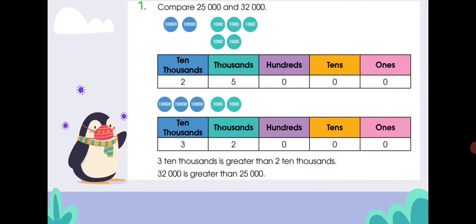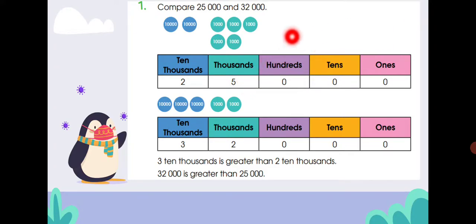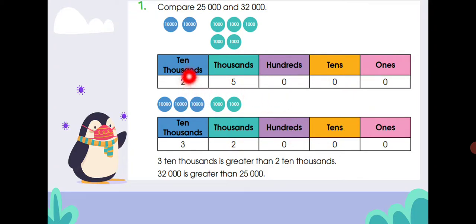Now, question number one from your textbook: compare twenty-five thousand and thirty-two thousand. Write them in the place value chart. For twenty-five thousand you have two in ten-thousands and five in thousands, with hundreds, tens, and ones as zero. For thirty-two thousand: three in ten-thousands, two in thousands, and zeros for the rest.